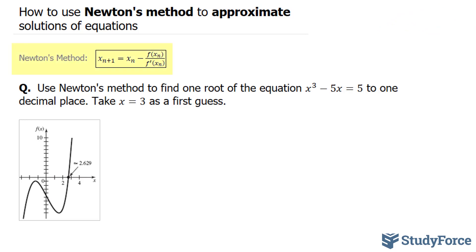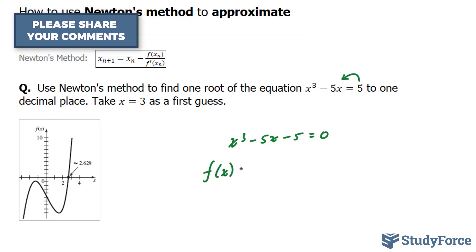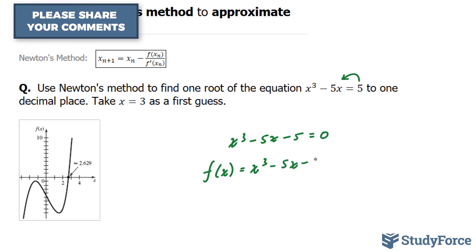Newton's method utilizes this recursion formula and here's how to use it. First, you want to take the derivative of your function. Bring all the terms to one side and make one side equal to 0. So I'll bring this 5 over and I end up with x³ minus 5x minus 5. Put it into function notation: f(x) equals x³ minus 5x minus 5.